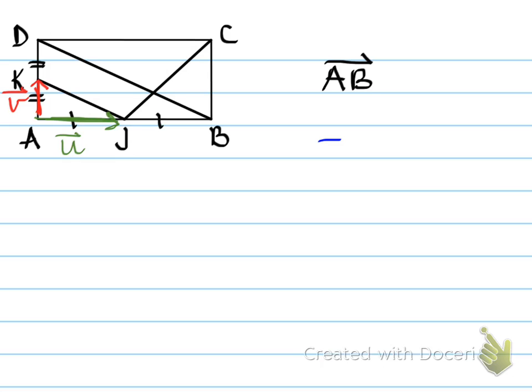You want to know the value of vector AB. To get from A to B, you actually have to double vector u, because from A to B is double the length of A to J. A to J is vector u. Double that will give us A to B. So 2 vector u is equivalent to vector AB.